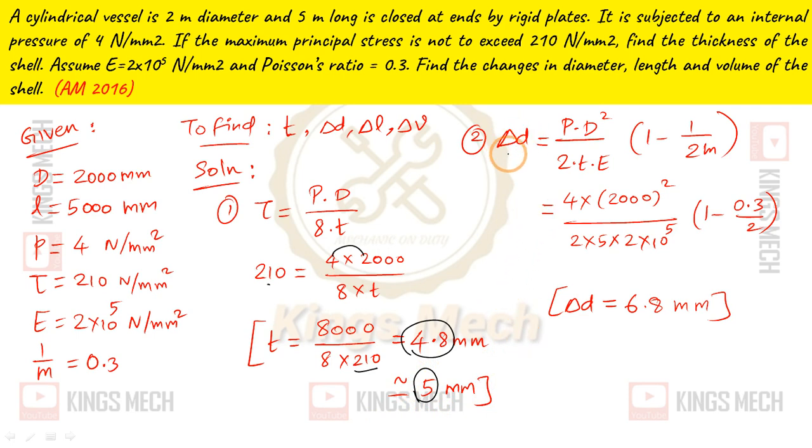Now to find the change in diameter, δD formula is: PD²/(2tE) × (1 - 1/2m). 1/2m = 0.3/2 = 0.15, so 1 - 0.15 = 0.85. Substituting pressure = 4, D = 2000, divided by 2 into thickness into E. If you substitute, you get δD = 6.8 mm.